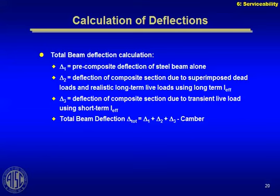The total beam deflection calculation: delta one is the pre-composite deflection of the steel beam alone — when you put the wet weight of the concrete on the bare steel beam, it deflects under that load. Delta two is the deflection of the composite section due to superimposed dead loads and realistic long-term live loads, using the long-term effective I. Delta three is the deflection of the composite section due to transient live load, using the short-term effective I. The total beam deflection is the sum of delta one, delta two, and delta three minus any camber you've put in. All of those deltas carry a little bit of error because composite action makes it very hard to calculate this accurately due to the properties of the concrete.